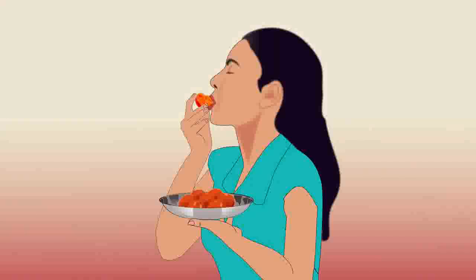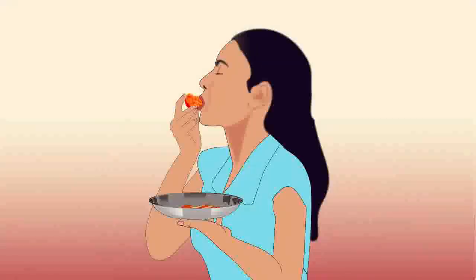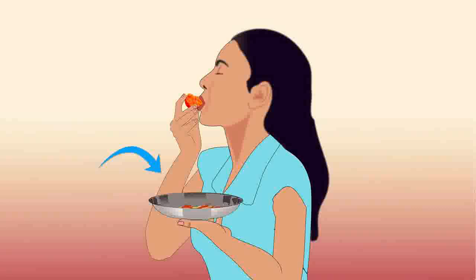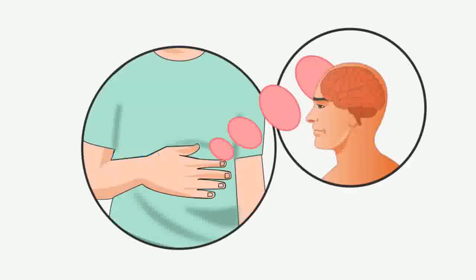Let us understand this with an example. While eating a biscuit or ladoo, we can't restrict ourselves to one piece. We crave to eat it more and more, and we mostly finish the entire packet of biscuits or many laddoos at a time. This is because of the hunger signals which are sent to the brain.